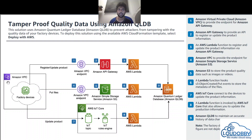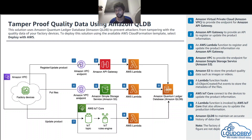Here we have a VPC, which is a kind of network in Amazon. From the VPC there are factory devices — for example, IoT devices or an application. It goes to the VPC endpoint. The endpoint is an API which comes from the Amazon API Gateway, and we have a Lambda function to register the product or information so that it goes to the QLDB.